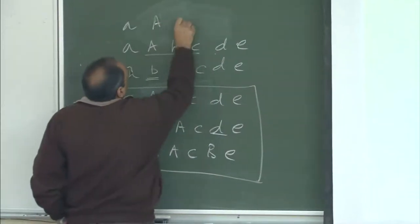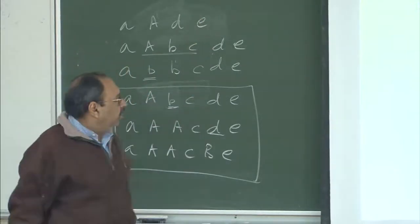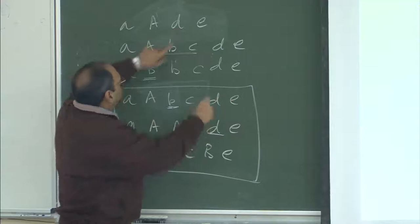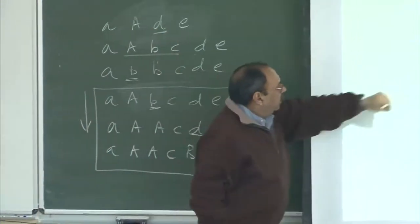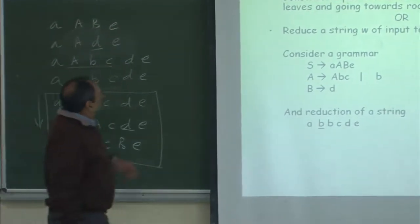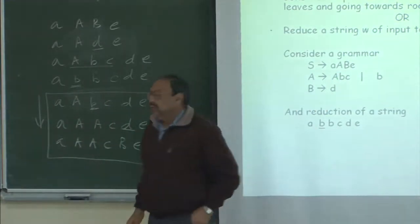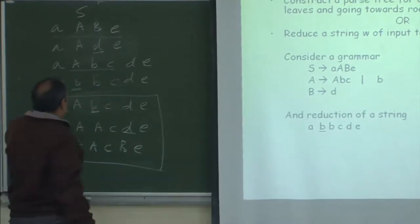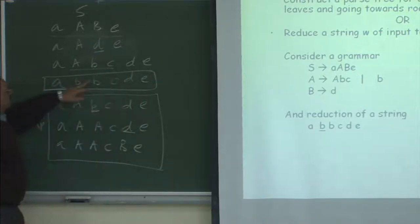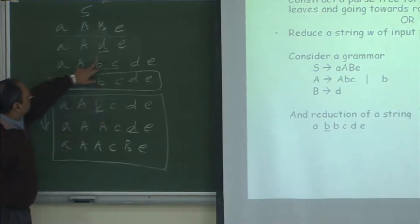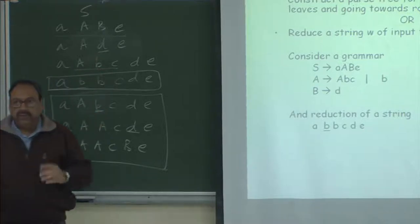If I do that, I get a new string configuration. Now again looking at the right-hand side pattern — B matches the right-hand side of a production, giving me E. I get a string which now matches the right-hand side of the first production, the whole thing, and therefore I reach the start symbol and can conclude that the string I started with is valid.